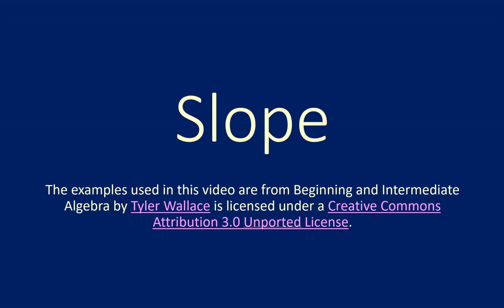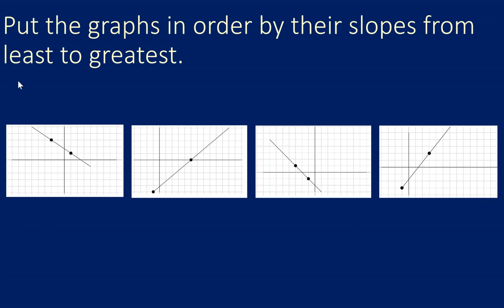In this video we will look at an example about slope. Here's an example that asks us to put these graphs in order by their slopes from least to greatest. Now we can go in and look at each one individually and count rise and run and calculate the slope for each one. Then once you have a slope number you can put them in order from least to greatest. However, I would like to first put these in order just by looking at them.